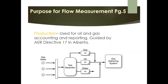The second purpose is production. Flow measurement is used for reporting oil and gas production and accounting. In Alberta, this is guided by Directive 17 from the Alberta Energy Regulator. We'll talk a lot more about Directive 17 this year and next year, so become familiar with it.